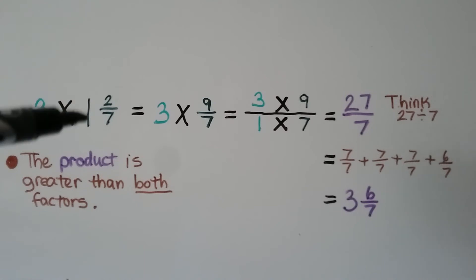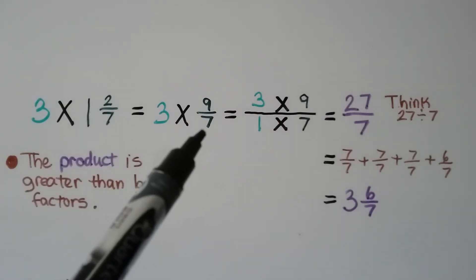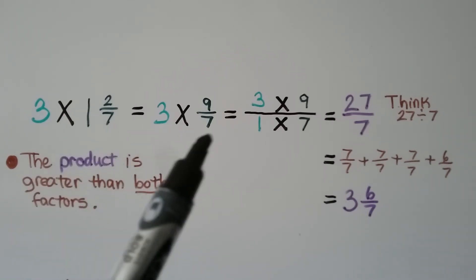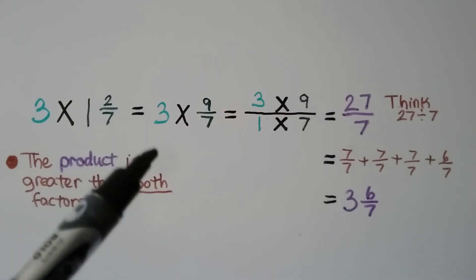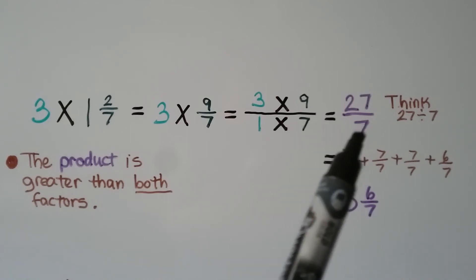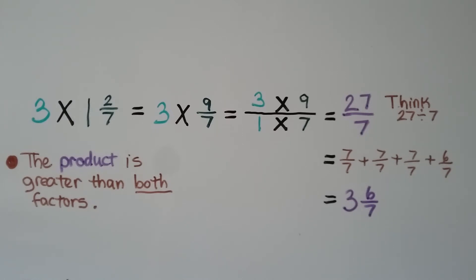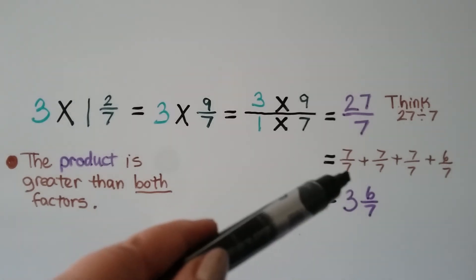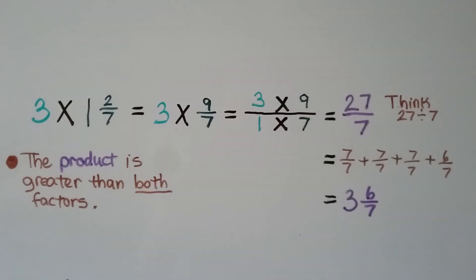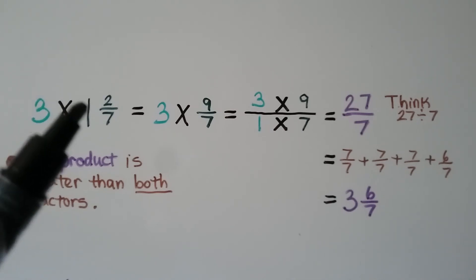For 3 times 1 and 2 sevenths, we convert: 1 times 7 is 7, plus 2 is 9, so 1 and 2 sevenths equals 9 sevenths. We write 3 as 3 over 1, then multiply: 3 times 9 is 27, and 1 times 7 is 7, giving 27 sevenths. Treating this as division, 27 divided by 7: three groups of 7 sevenths make 21, leaving 6 remaining. The answer is 3 and 6 sevenths, which is greater than both factors.